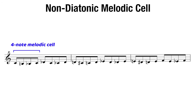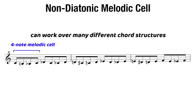The cool thing about melodic cells is that because they're so chromatic sometimes, or they're really targeting a note, they can work over so many different chord structures and chord progressions. But with this one, we're just going to stick with those four for now as we learn it. We want to practice this at tempos that are comfortable, maybe eventually clicking them up.